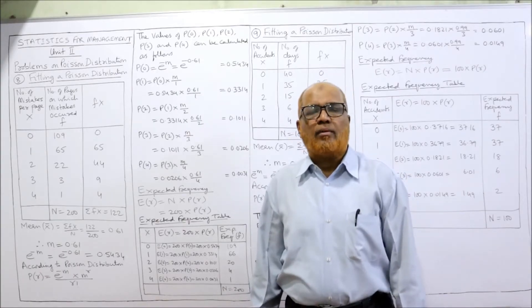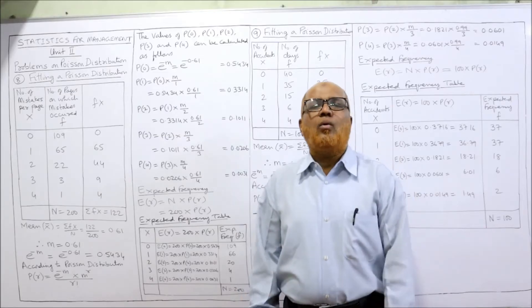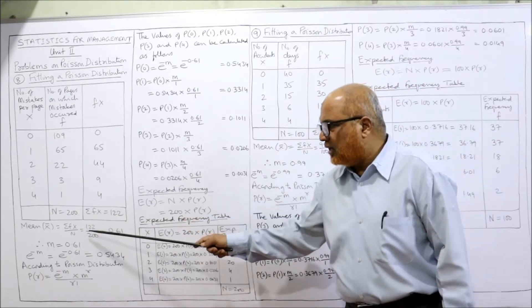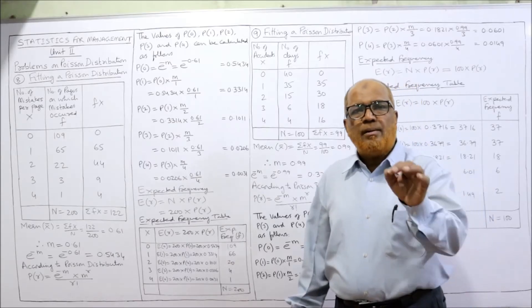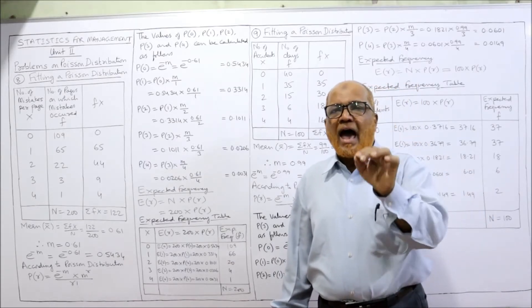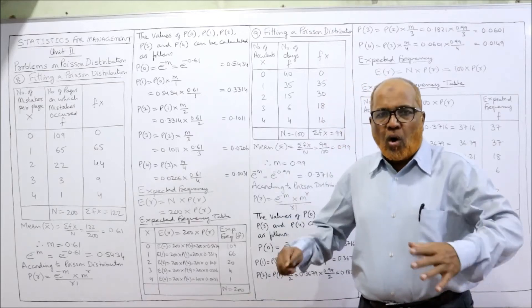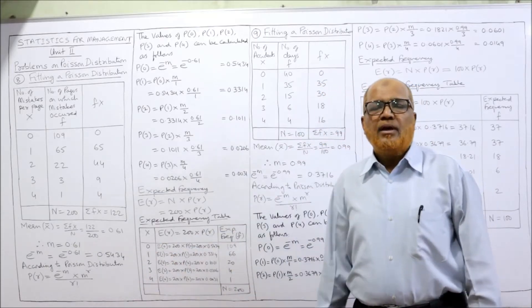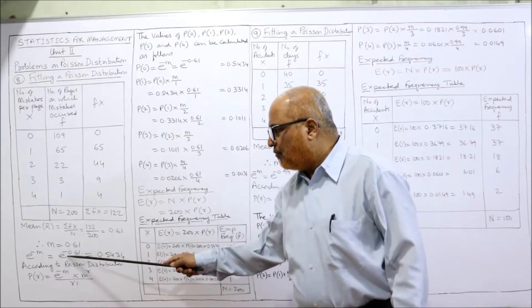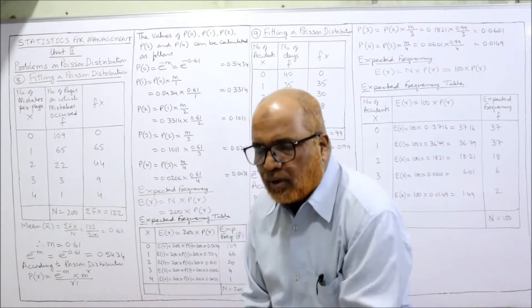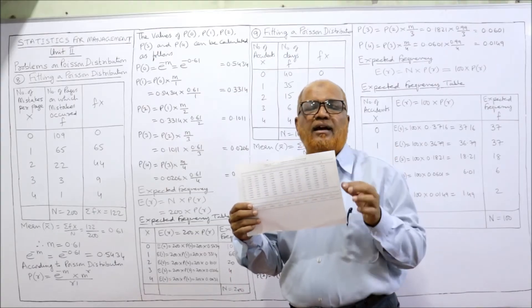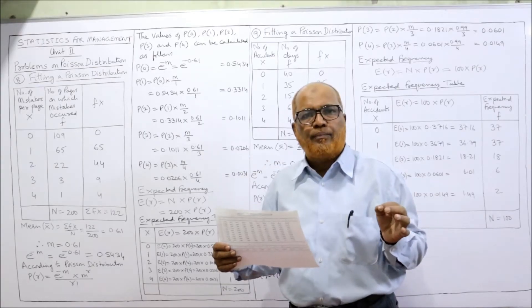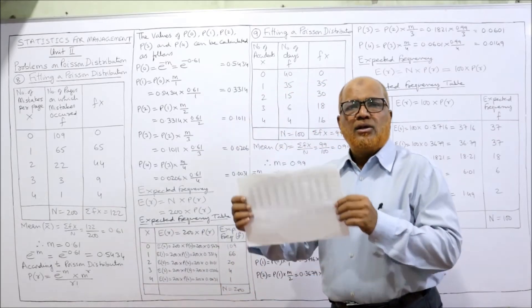Now we calculate the mean. The statistical formula is X-bar equals summation FX divided by N. Summation FX is 122, divided by 200, giving 0.61. This is the mean — on average, 0.61 mistakes per page. So M equals 0.61, and we need e to the power of minus M, that is e to the power of minus 0.61. Refer to the Poisson distribution table provided in the link under the description.